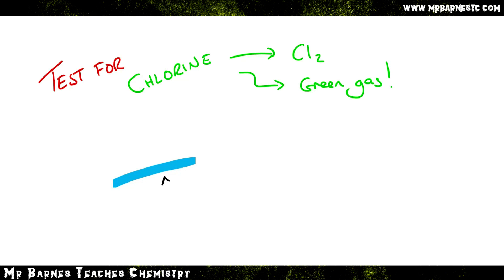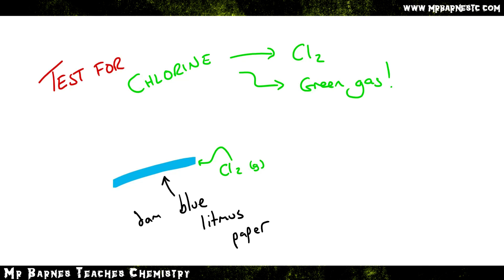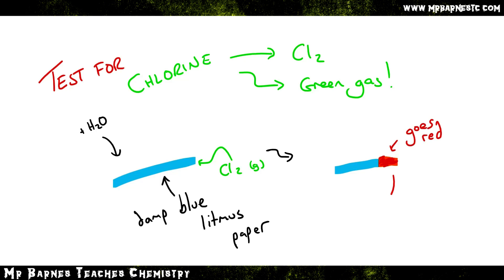When it comes to the test for chlorine, the first thing you need to do is get yourself some blue litmus paper. Once you've got that, you want to add some water to it so you have damp blue litmus paper. When you then add your unknown gas to that litmus paper it will start to go red and then eventually it will bleach.